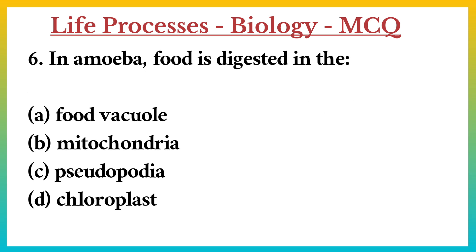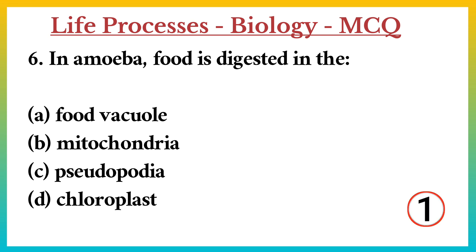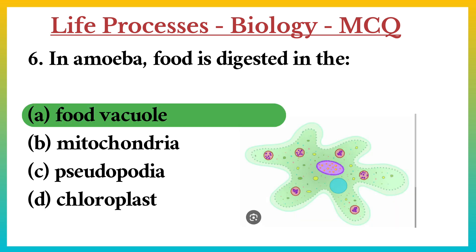Question number 6. In amoeba, food is digested in the? A. Food vacuole. B. Mitochondria. C. Pseudopodia. D. Chloroplast. Answer: A. Food vacuole.